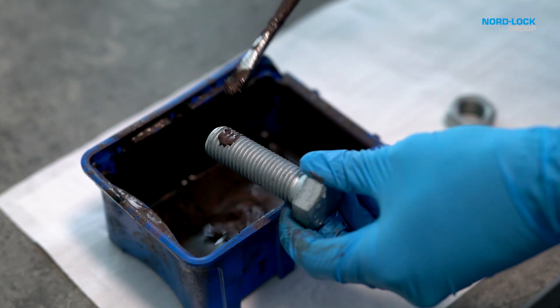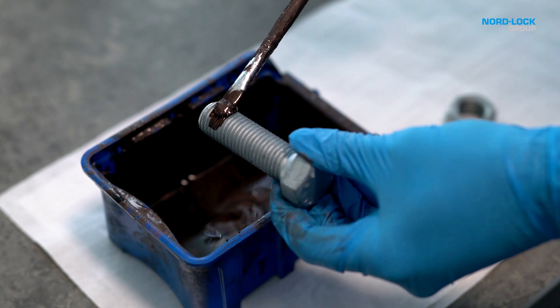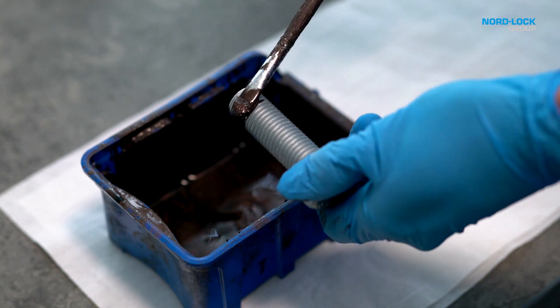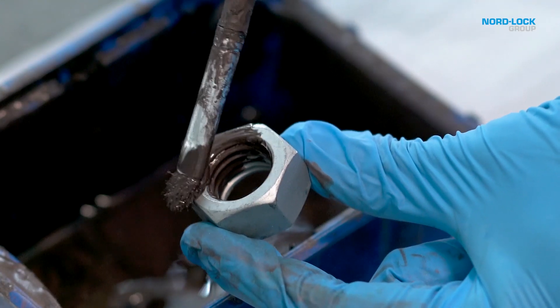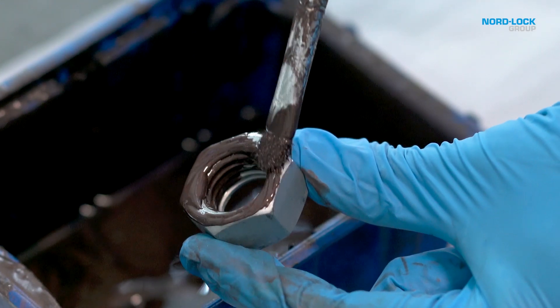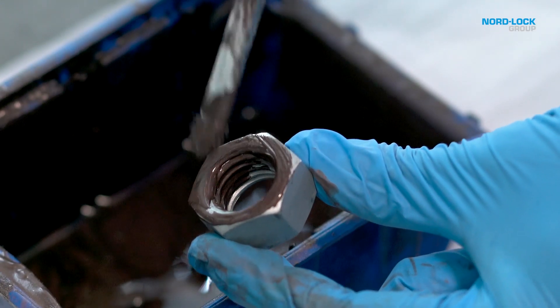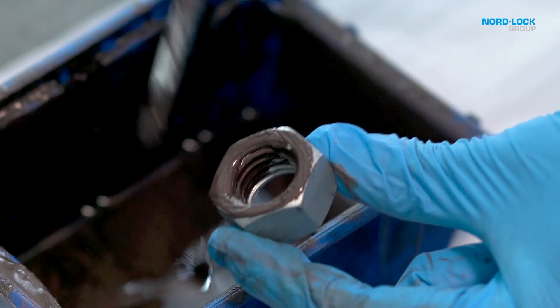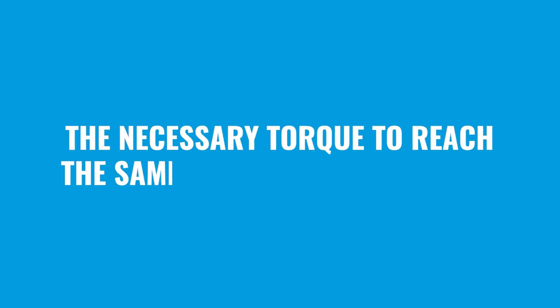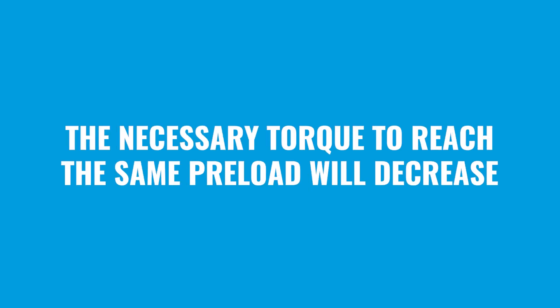The portion of effective torque can be increased by applying a low friction coating or lubricant. The effect of friction will be greatly reduced and the necessary torque to reach the same preload will decrease.